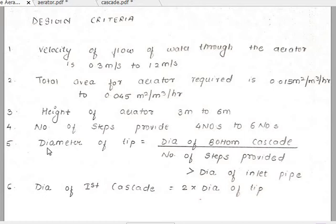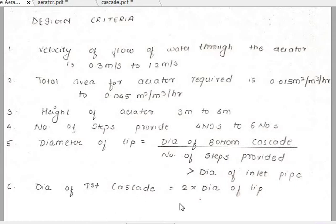Point number five: the diameter of the tip is calculated as the diameter of the bottom cascade divided by the number of steps provided, and it should be greater than the diameter of the inlet pipe. After calculating the diameter of the tip, point number six: the diameter of the first cascade is 2 times the diameter of the tip. Based on these design criteria we have to design the cascade aerator.